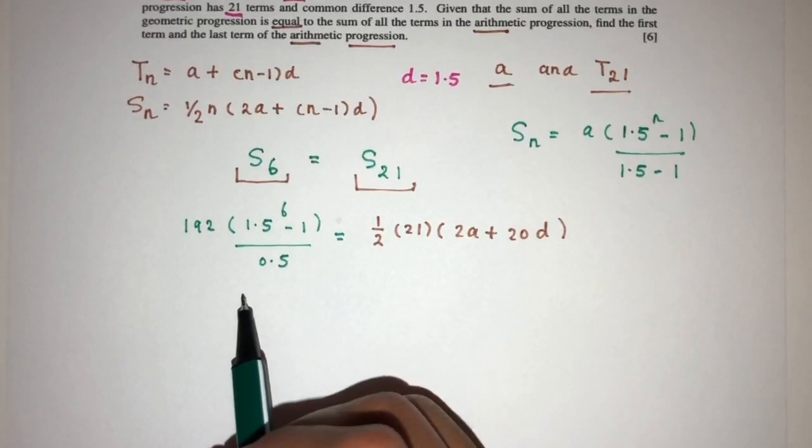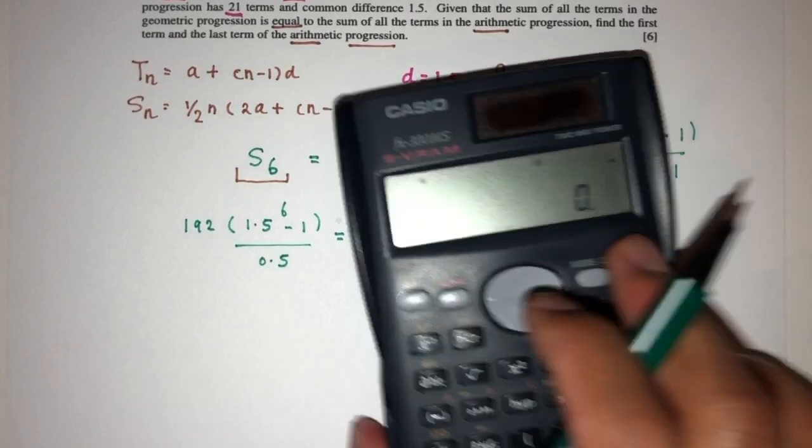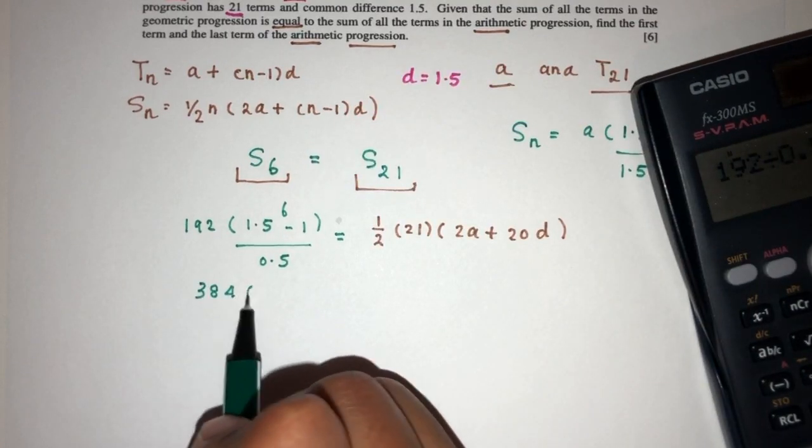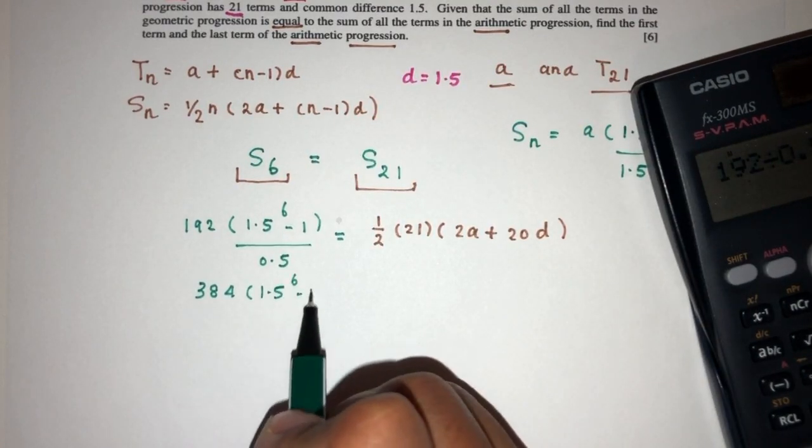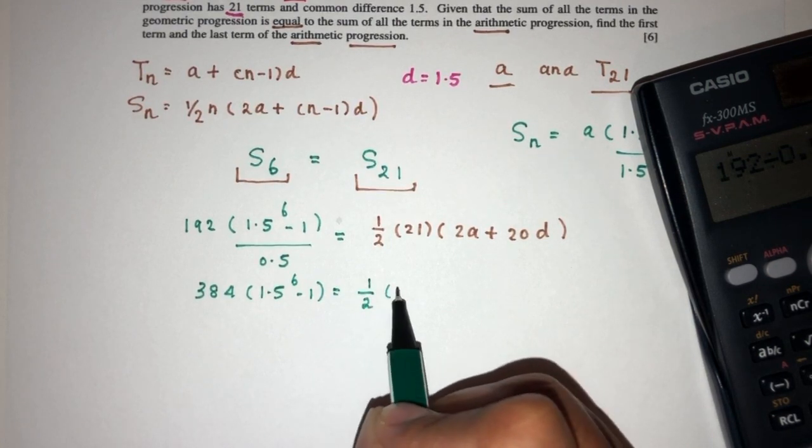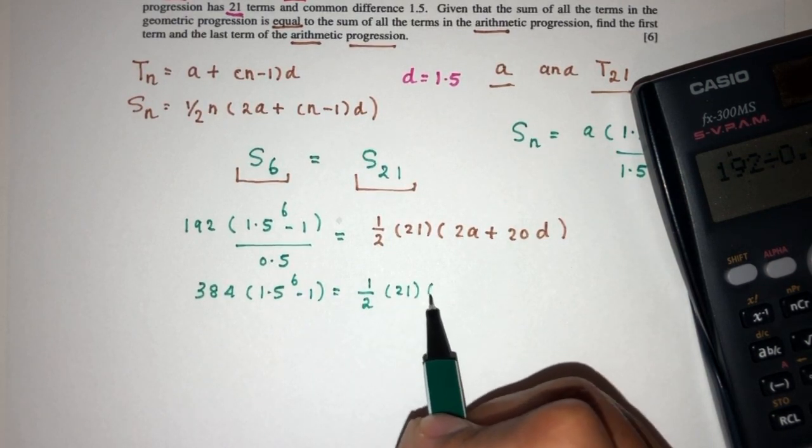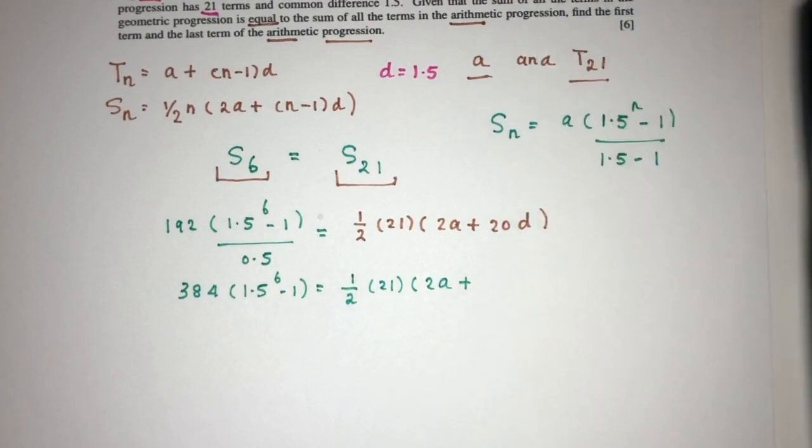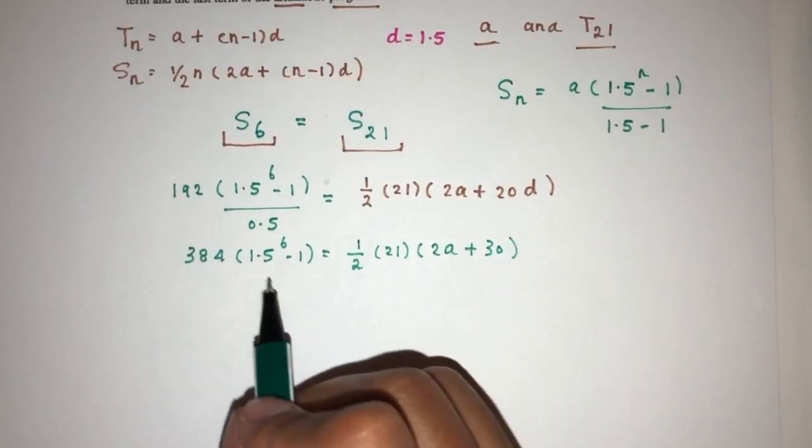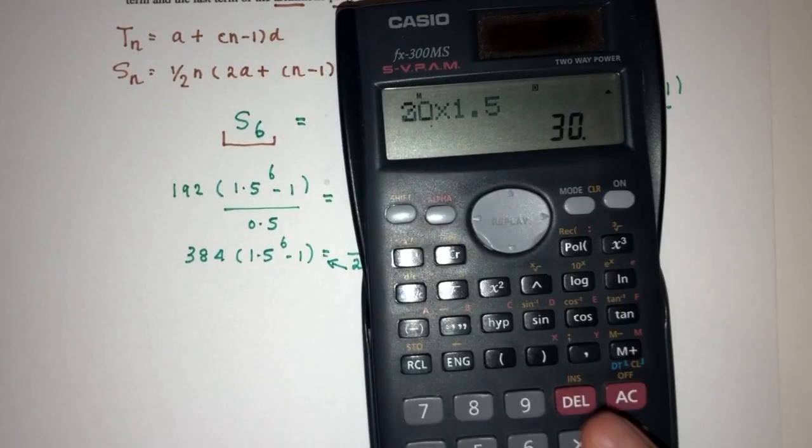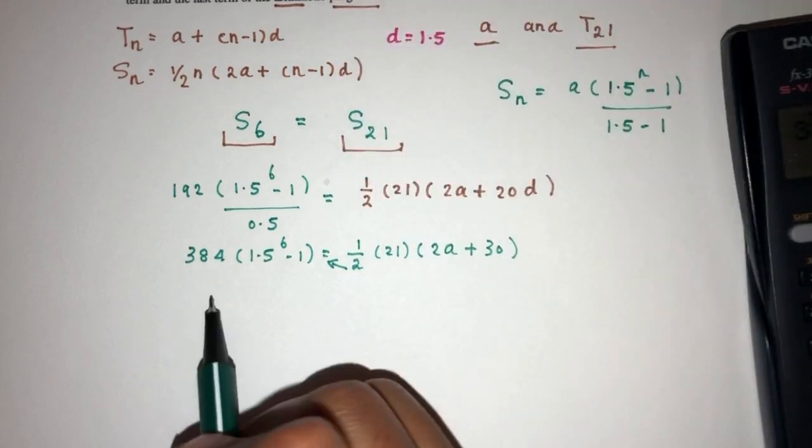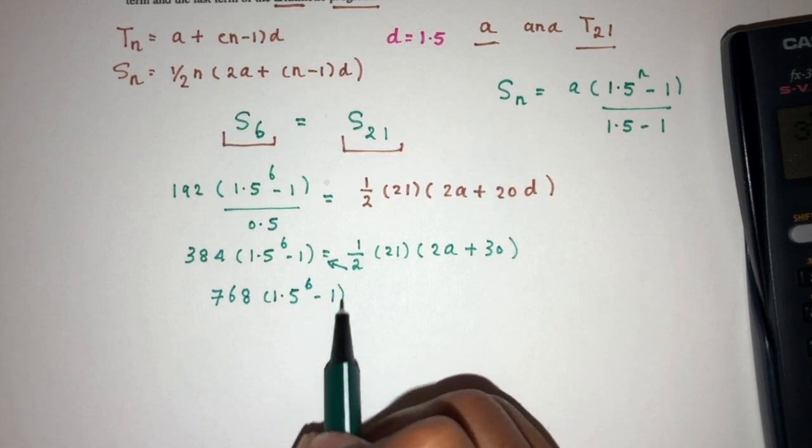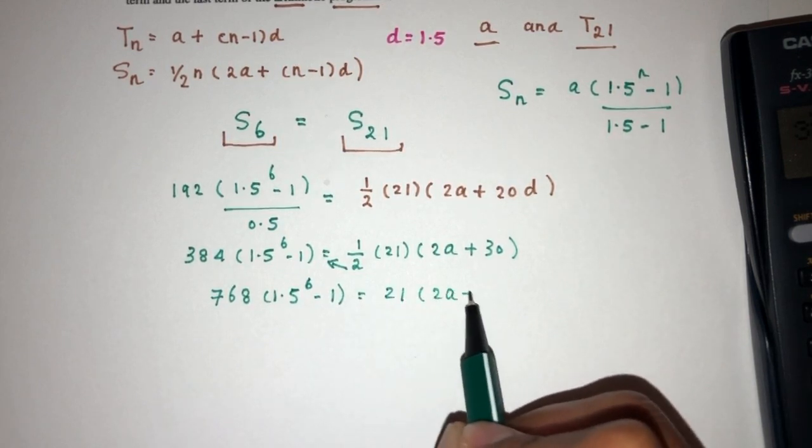For now, we can just try to solve this. Here we have divided by 0.5, which is, 192 divided by 0.5 should be 384, 1.5 to the power 6 minus 1. Here we have half of 21, and here we have 2a plus 20 times 1.5 should be 30. We can multiply by 2. You will have 384 times 2, that should be 768, then 1.5 to the power 6 minus 1. That should be 21, then 2a plus 30.